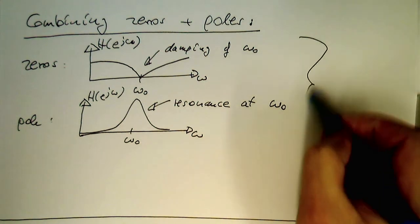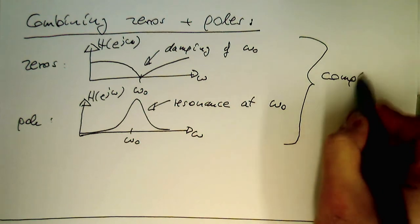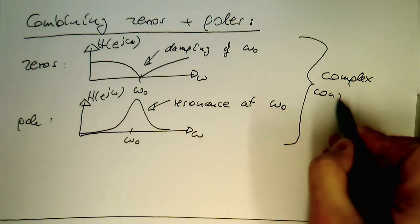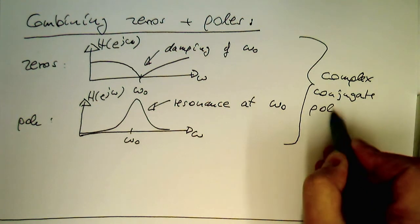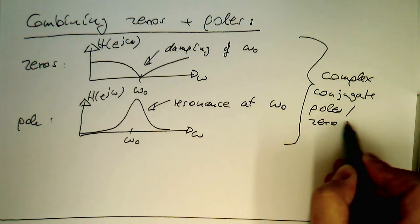Obviously, both zeros and poles, they are both complex conjugate poles and zeros. So both, second order.